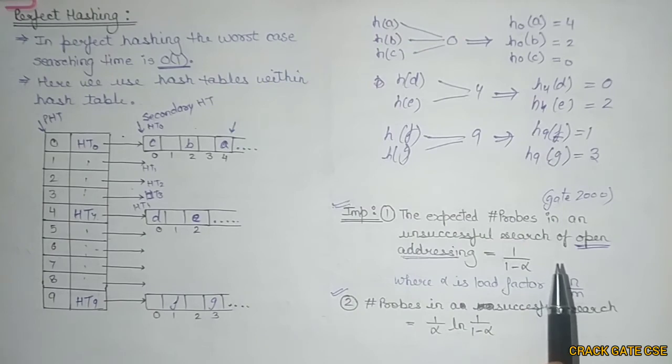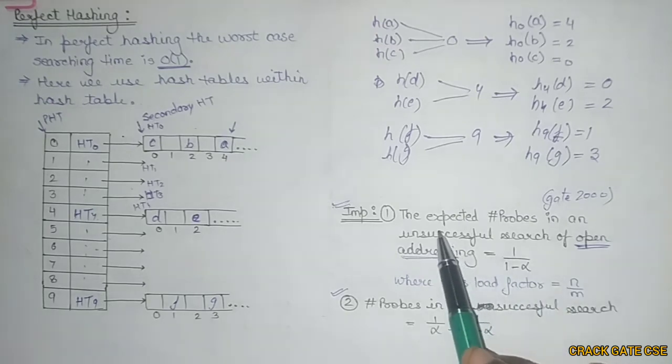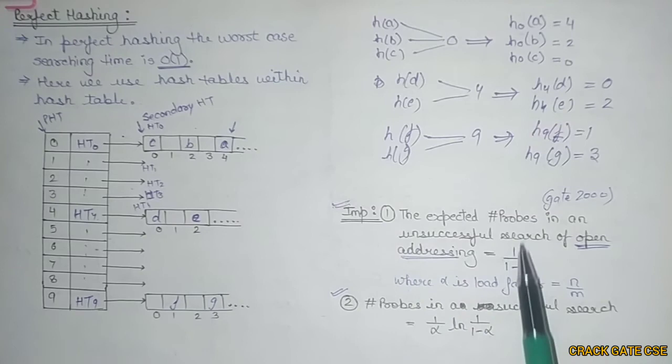In any of these open addressing techniques, if we're asking how many expected number of probes is going on in an unsuccessful search, you can find it out using the formula: 1/(1-α). This α represents the load factor.